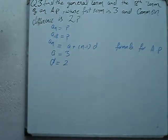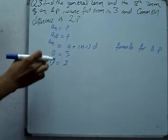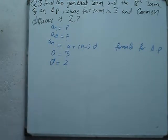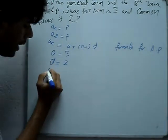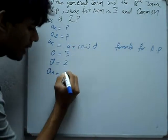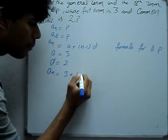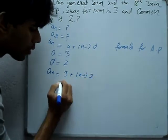Now what is the general term? AN equals 3 plus (n minus 1) into 2, which equals 3 plus 2n minus 2.